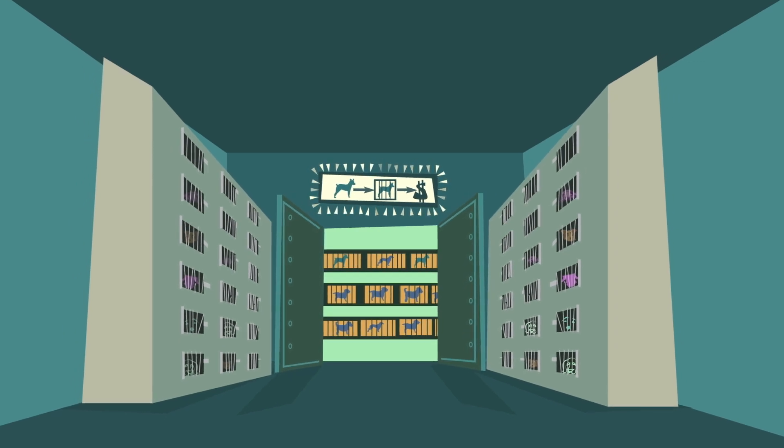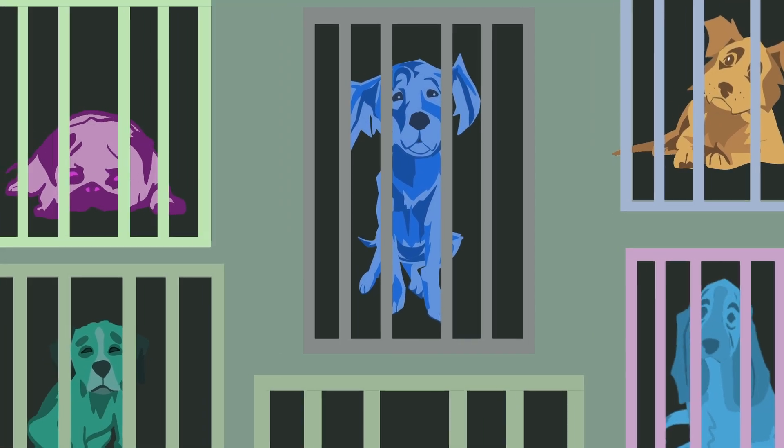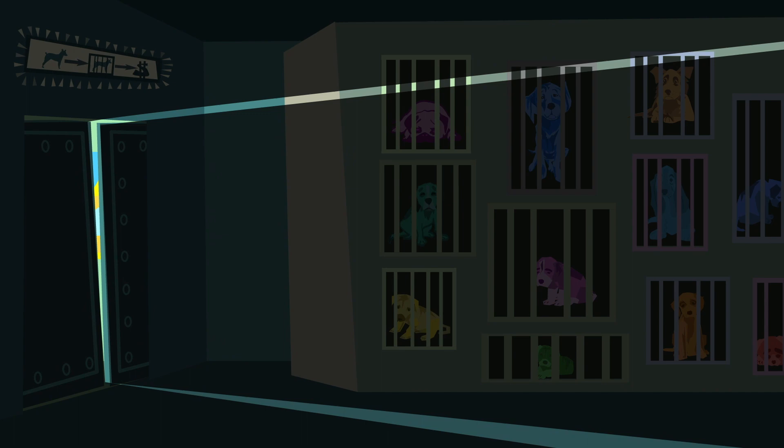You've probably heard of puppy mills. They can be terrible places for animals. Tiny cages, no exercise, very little medical care. Some dogs at puppy mills never even see the sun.